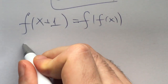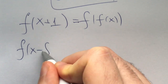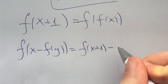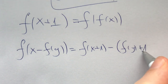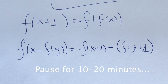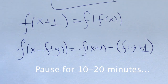So we have that f of x minus f of y is equal to f of x plus 1 minus f of y plus 1. From here there are many ways to continue, and the way you choose really depends on your style. I invite you now to pause for 10 to 20 minutes and see how far you can take this. I will describe one approach which we will not take here, and then solve it in a totally different way.